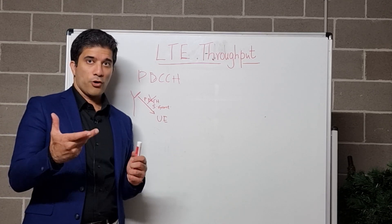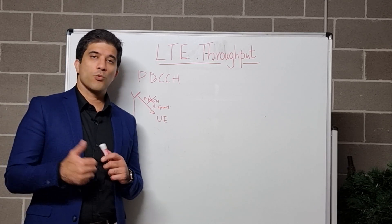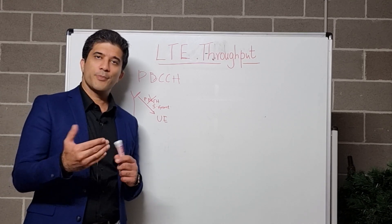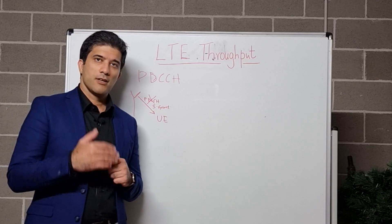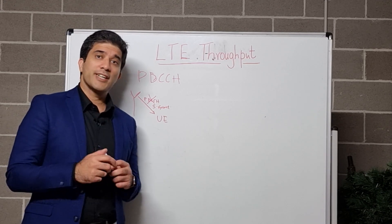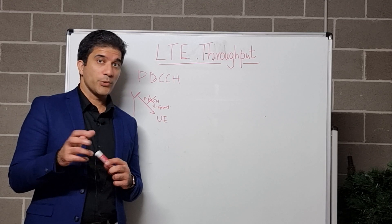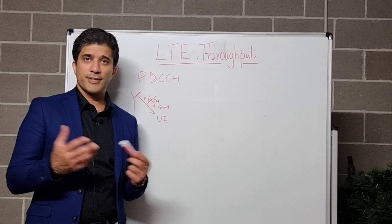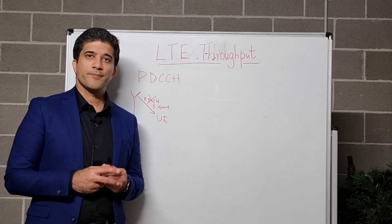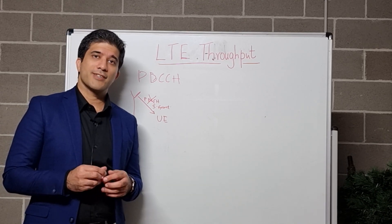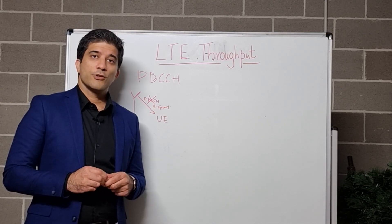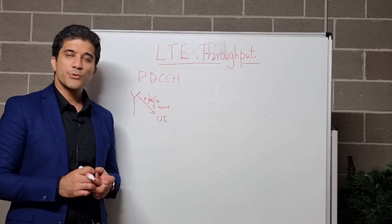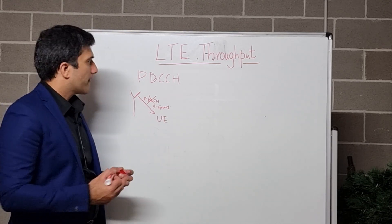The other scenario is that the PDCCH is sent to your UE but your UE or phone cannot decode it. Once it cannot decode it, the eNodeB is sending the PDCCH and also sending out the data, but your UE never received that PDCCH because of bad coverage, interference, or anything else. Therefore the UE will not listen to that transmission and your throughput will degrade.